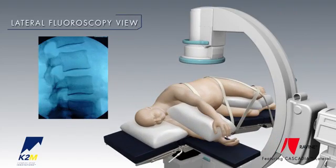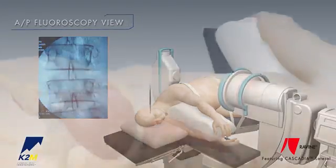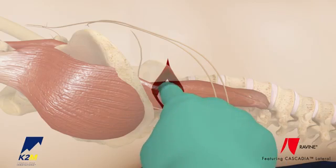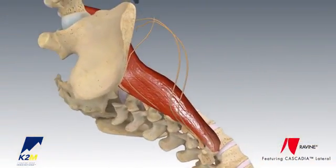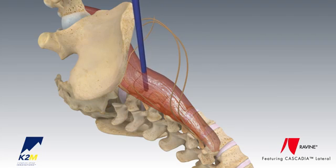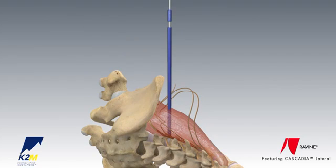Next, fluoroscopy is used to identify the correct operative level and a skin incision is made targeting the middle of the disc. Finger palpation of the psoas muscle, or the anterior tip of the transverse process, is used to confirm the proper location. Once verified, the initial 6mm dissector is introduced into the prepared path and advanced through the psoas muscle, and the dissector is docked directly onto the middle of the disc.